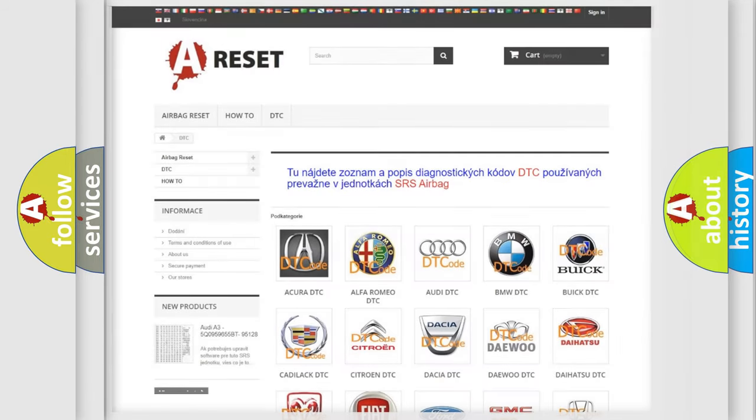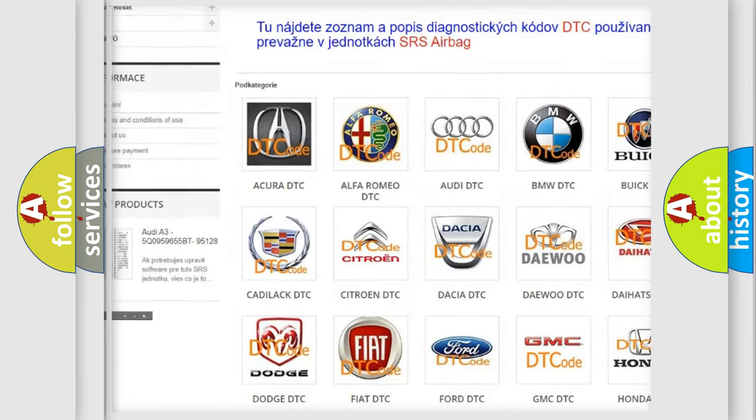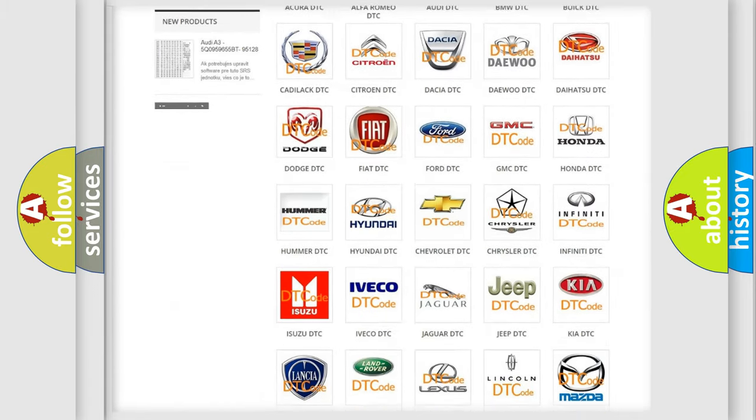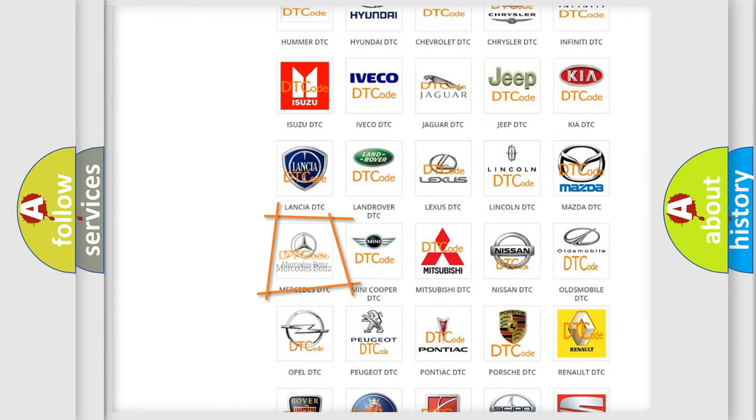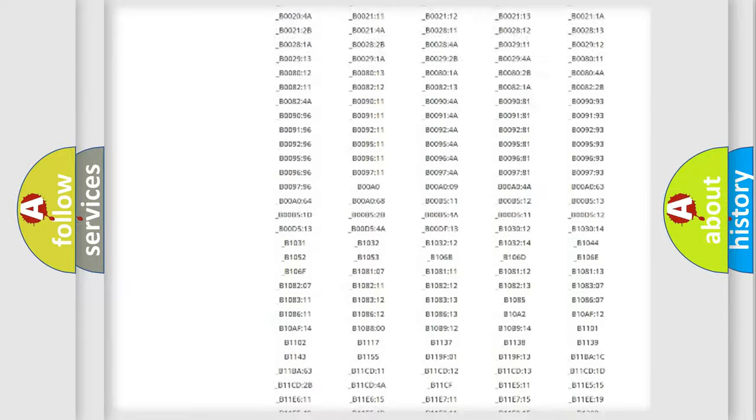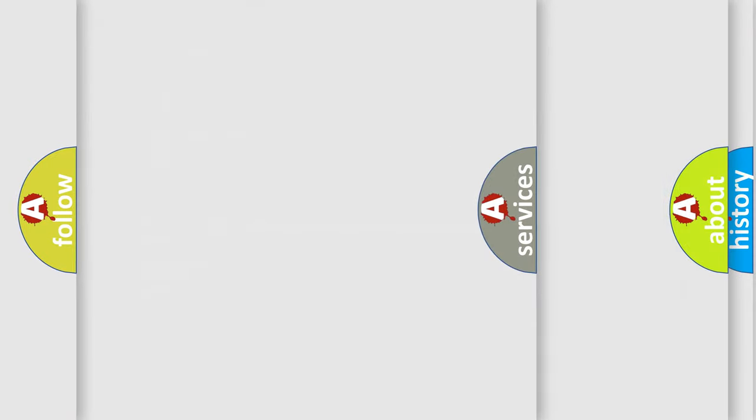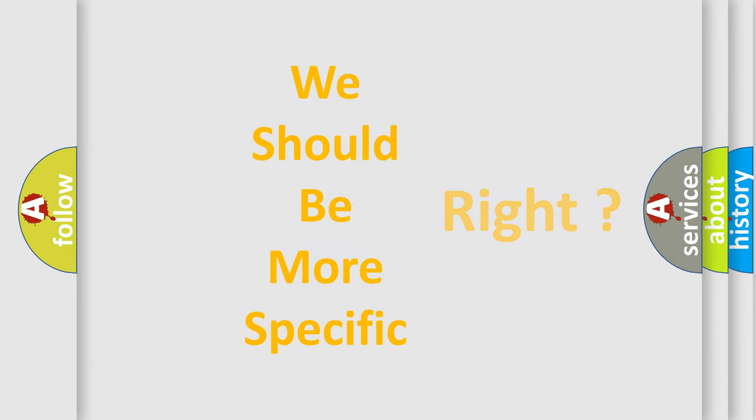Our website airbagreset.sk produces useful videos for you. You do not have to go through the OBD2 protocol anymore to know how to troubleshoot any car breakdown. You will find all the diagnostic codes that can be diagnosed in Mercedes vehicles and many other useful things. The following demonstration will help you look into the world of software for car control units.